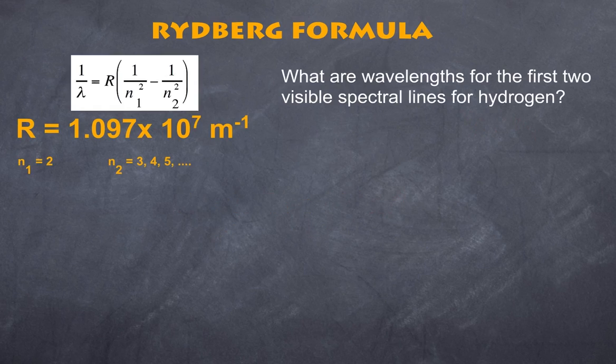So, here is the formula again. And let's have a look at our mathematical problem. So, the question here is, what are the wavelengths for the first two visible spectral lines for hydrogen? You may want to try this yourself and pause the video right here.